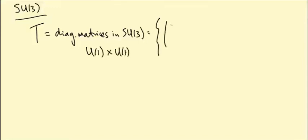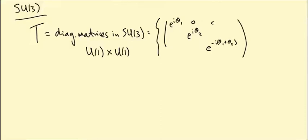Let's see why. If you're diagonal in SU3, you can have any unit complex number in the first and second entries. But then the third entry is determined by the condition that the determinant is one. So the diagonal entries are e^{iθ₁}, e^{iθ₂}, and e^{-i(θ₁+θ₂)}.